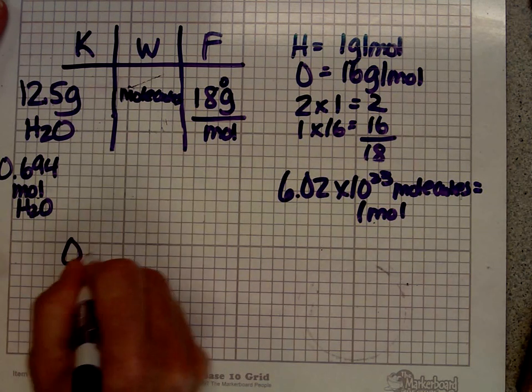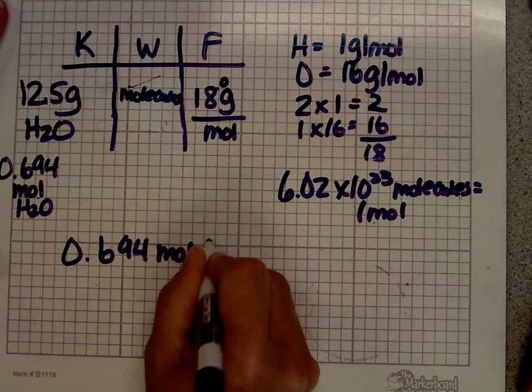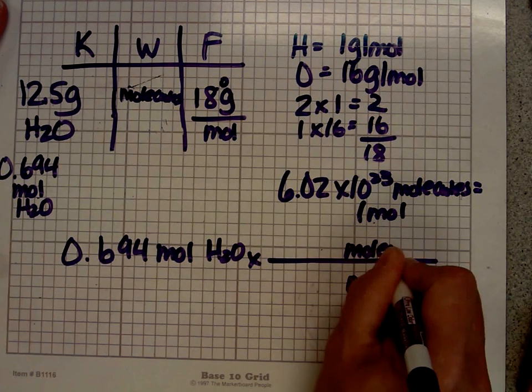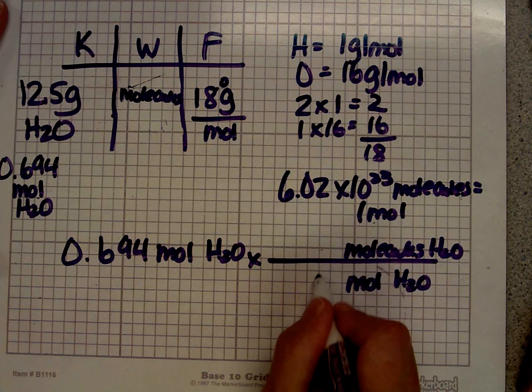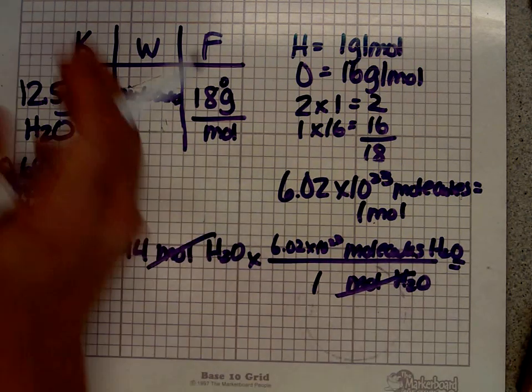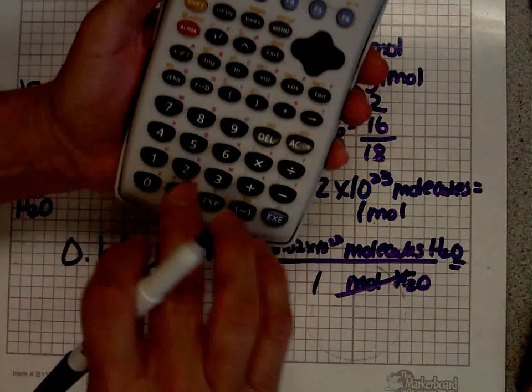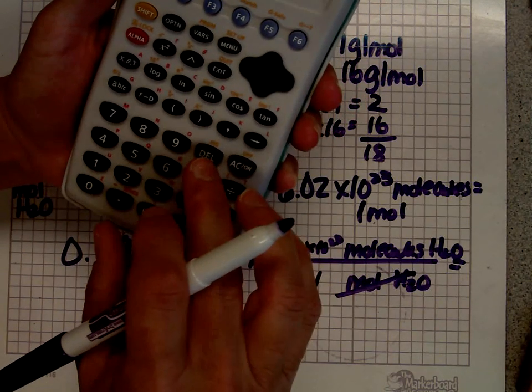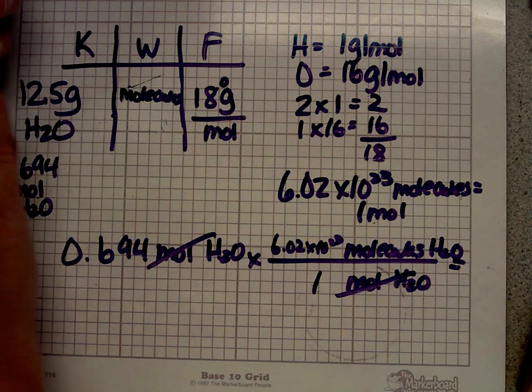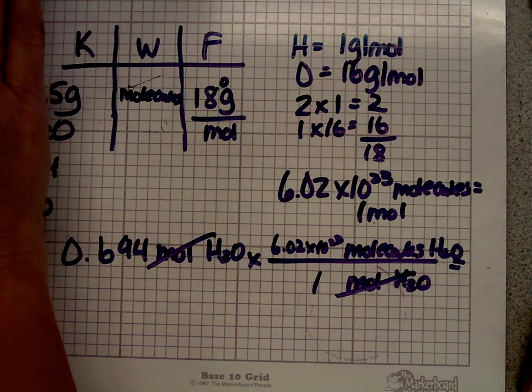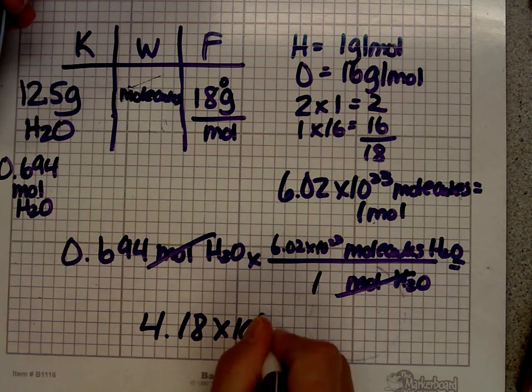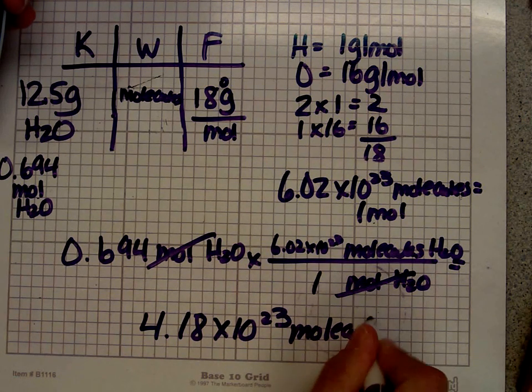So I can simply take my 0.694 moles of water. I want to get rid of moles of water. I want to be left with molecules of water. Next to the mole, I have the number 1. Next to the molecule, I have the 6.02 times 10 to the 23rd. Press that into my handy-dandy calculator times 6.02 times 10 to the 23rd. Times 10 to the 23rd. Oops, made a mistake there. Hold on just a second. Delete that number. There we go. And I get 4.18 times 10 to the 23rd molecules of water.